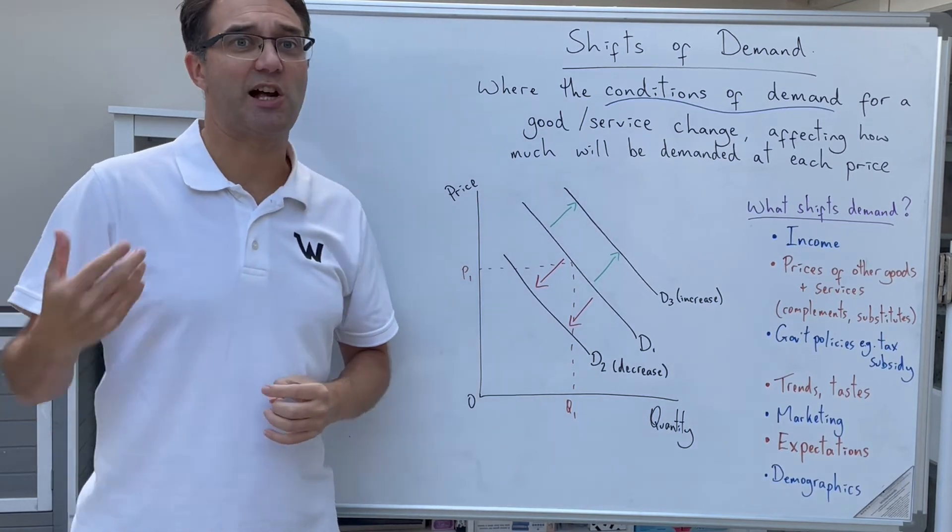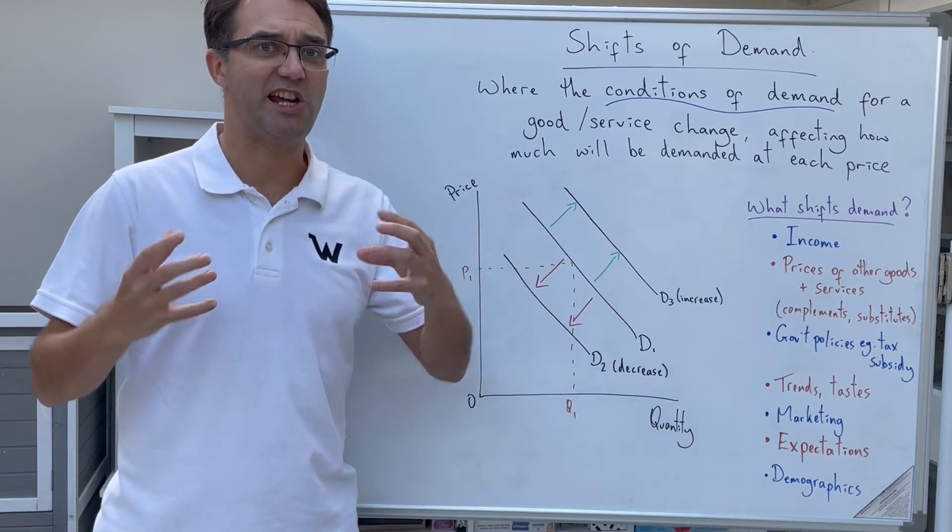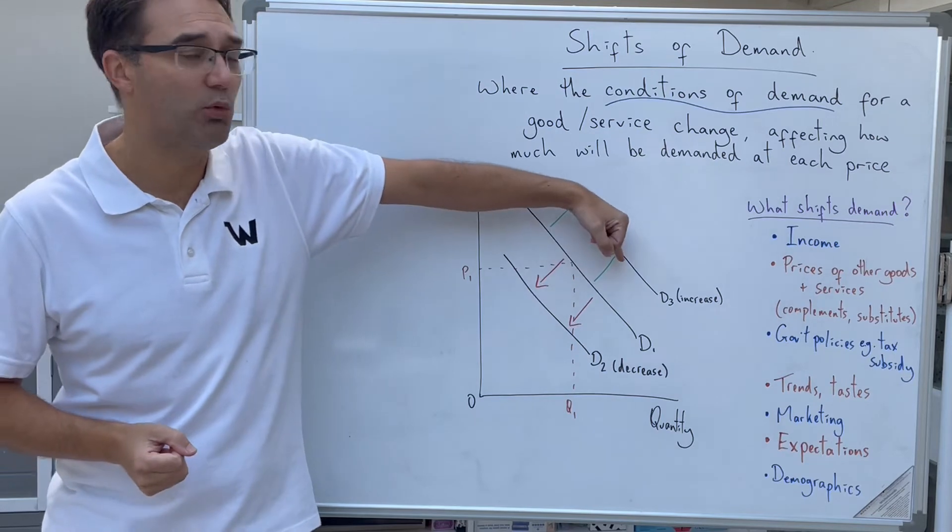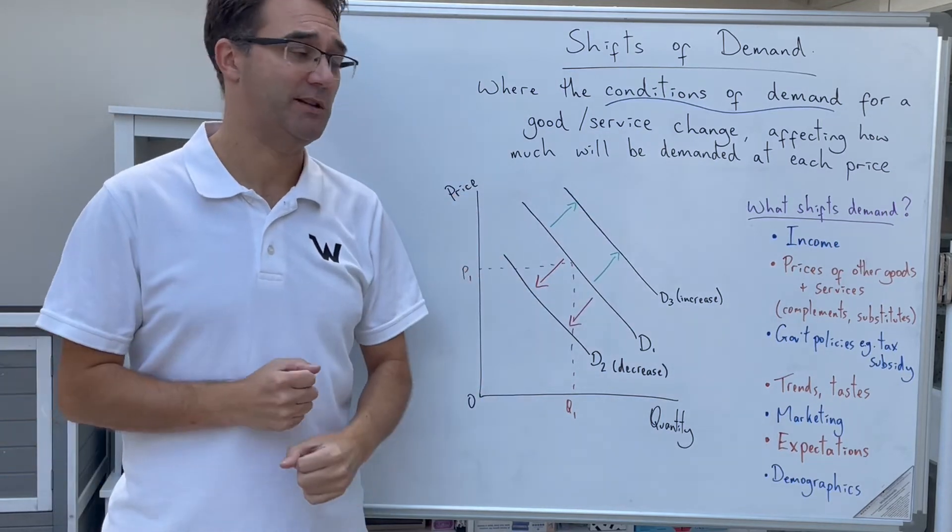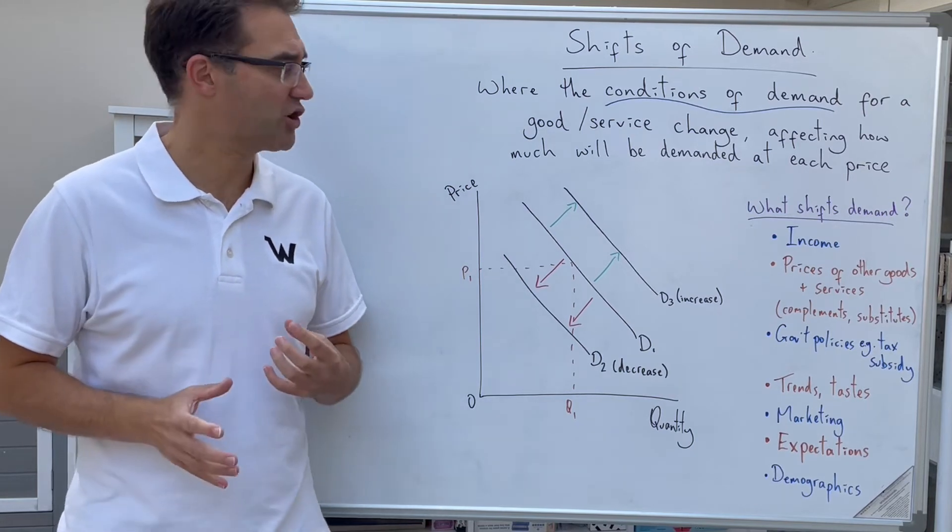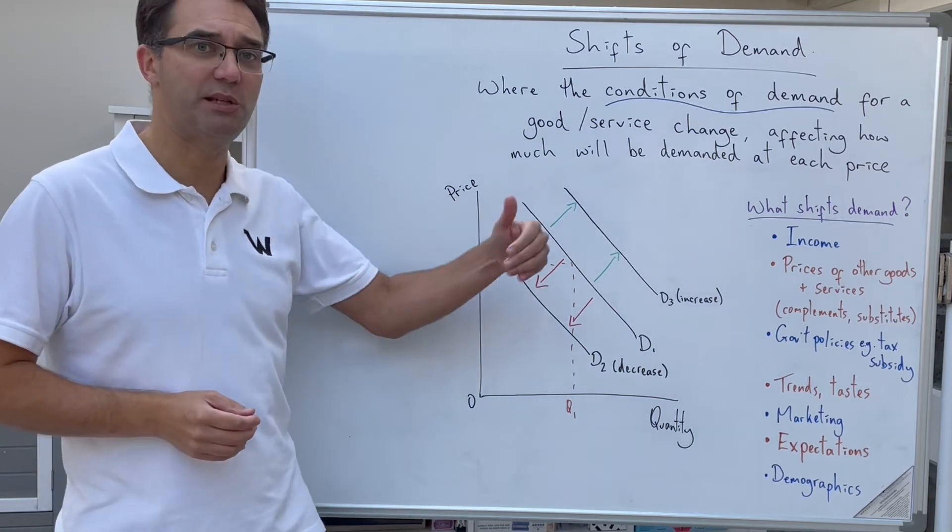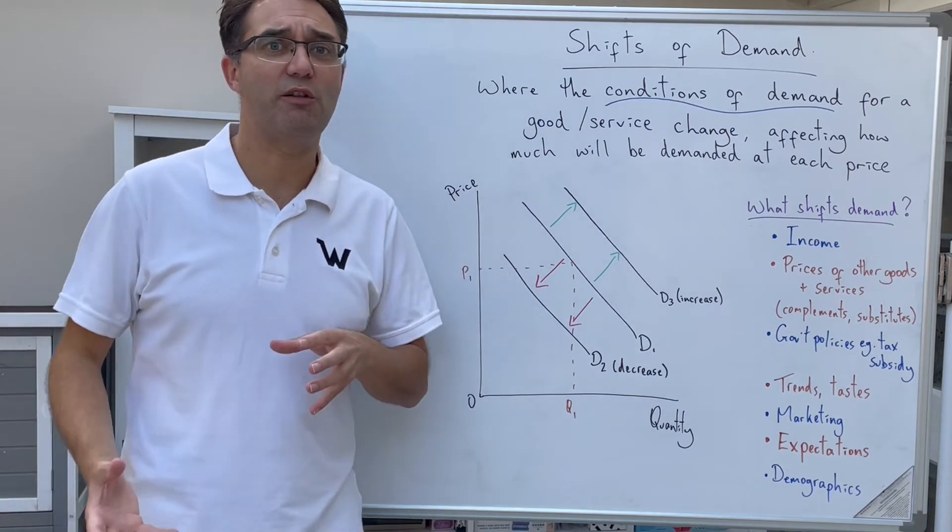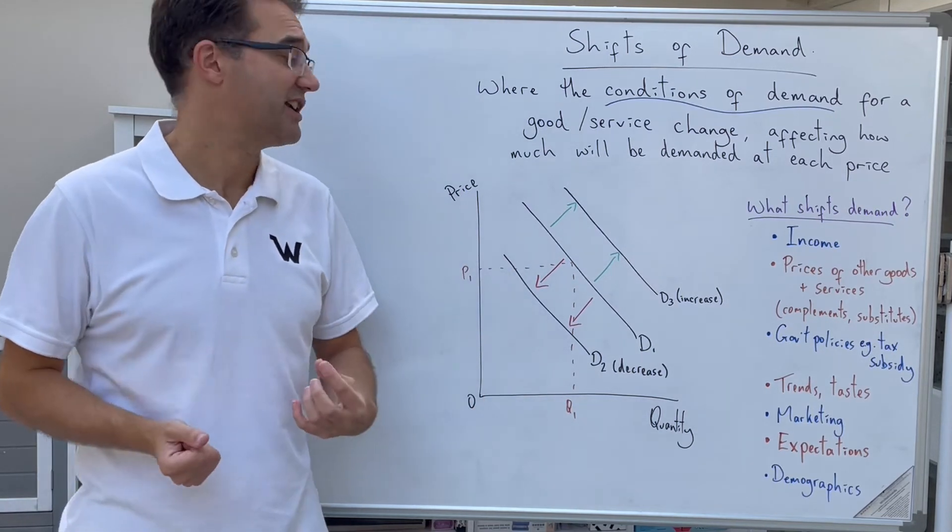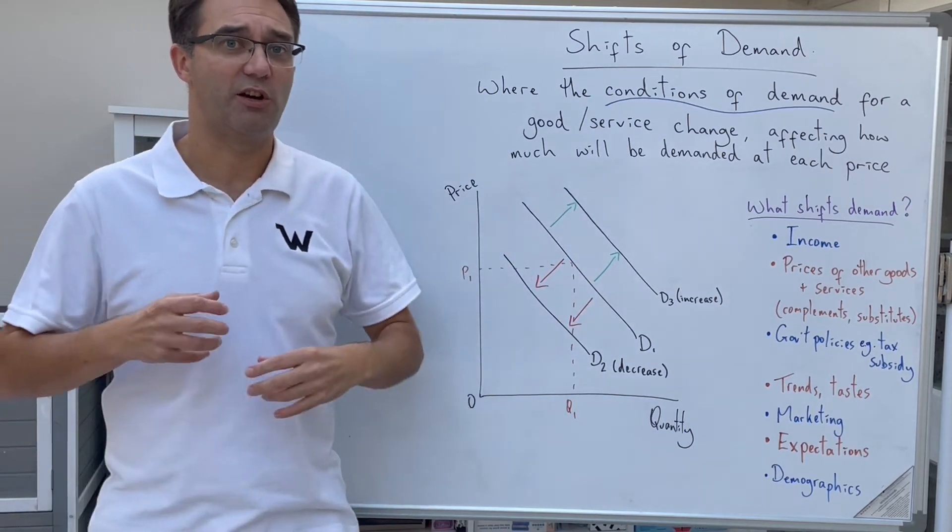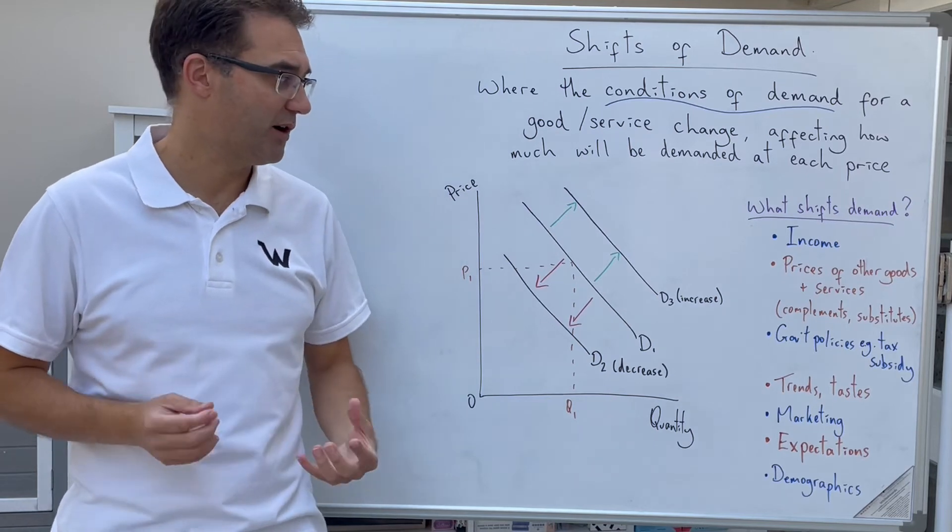So we could say they're substitutes, they can be used instead of each other. The price of fish rises, we'd see a shift outwards in the demand curve for pies. Over time, people's trends and tastes also change. Things might come into fashion, and that might increase the demand for that good or service. Over time, things might also go out of fashion. They may become obsolete, and that would mean demand for them falls. So again, something that can shift the demand curve over time.